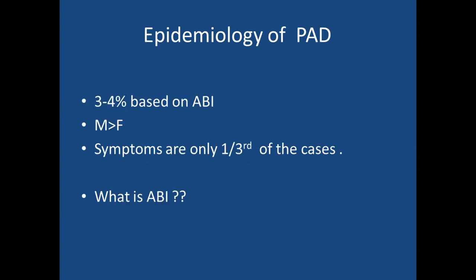Peripheral arterial disease is highly prevalent, but usually underestimated because many cases are asymptomatic. Using the ankle-brachial pressure index as a marker, there is a very high prevalence in the range of 4% of the population.